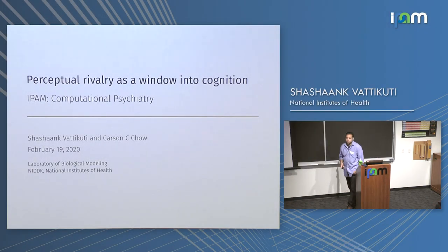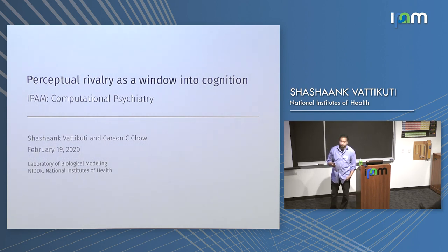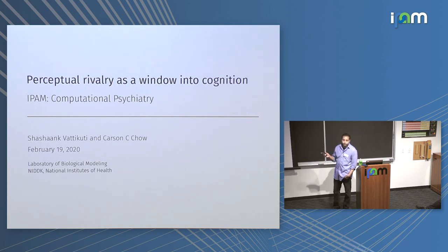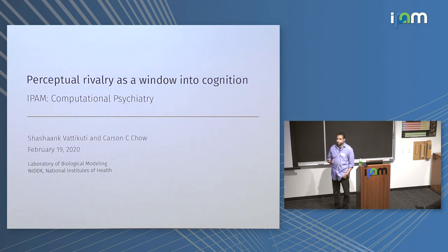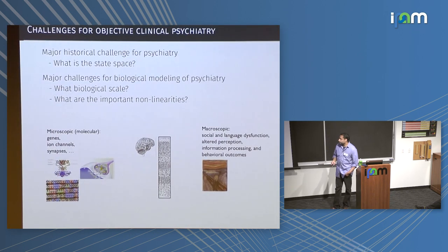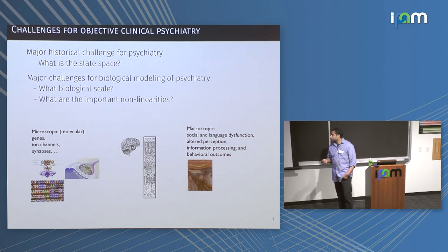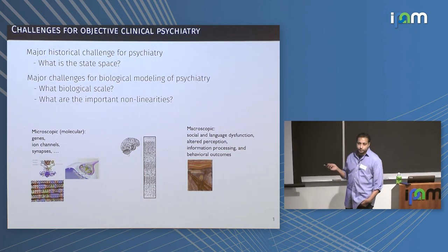Good morning. Exciting to be here. I really enjoyed the talks from yesterday and hoping to maybe integrate them into work that I'm doing. I'm excited to talk about what I've been working on and hopefully point out some opportunities for both analysis and experimentation. I'm going to talk about a paradigm or framework that I've been developing with Carson Chow over at NIH, specifically trying to come up with an objective approach for clinical psychiatry and mental illness studies. I'd like to start off with some of the major challenges we face coming up with an objective approach for psychiatry.